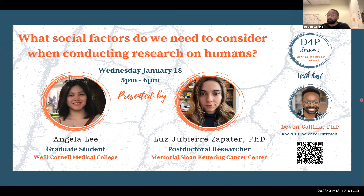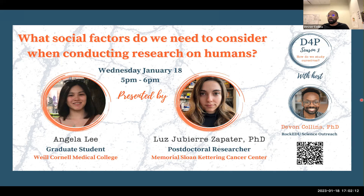The theme for this season of Data for the People is People and Medicine. During this season we'll explore the science of how we study ourselves — how our complexity as organisms and as people with unique lives, identities, and characteristics create challenges and opportunities for improving human health. We'll also draw through-lines from the past to the present, examining how historical biases and power structures have influenced the way scientific knowledge is generated, valued, and transformed into medical advances. We'll consider questions like the ethics of genome sequencing studies, the rationale for gender and race-balanced clinical trials, and the role of social inequities in healthcare access and outcomes.